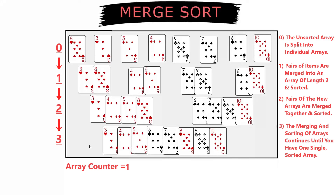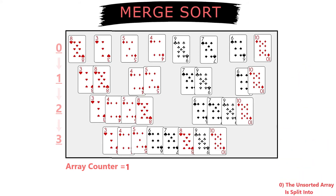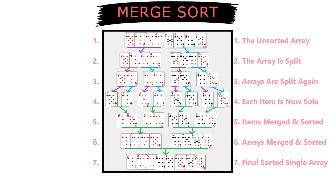One side note: if there is an odd amount of items in the array, the sort still works. One array will just have one less item than the others on each step until they are all merged together at the very end.